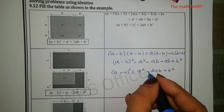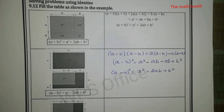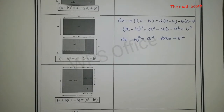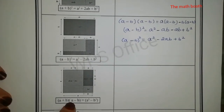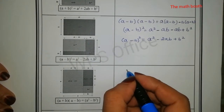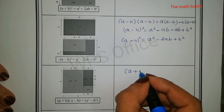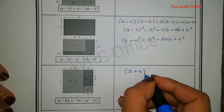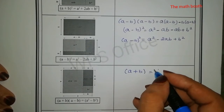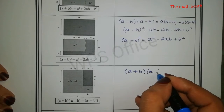So we got the answer: (a - b)² = a² - 2ab + b². This is the identity. Now let us see the third one — here they have told (a + b)(a - b) is equal to a² - b².